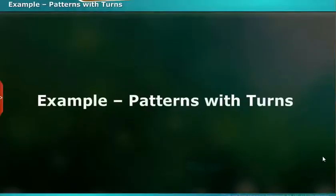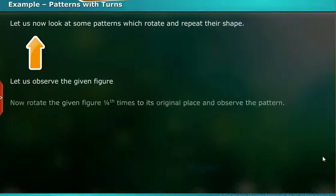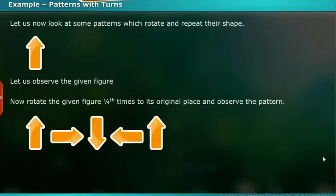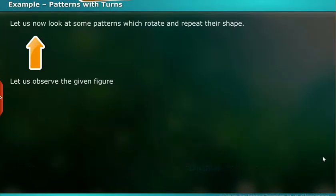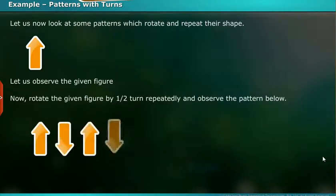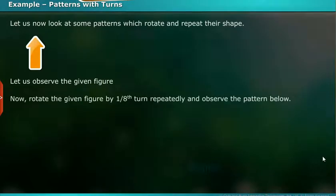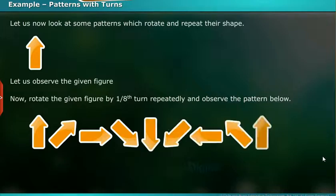Let us see an example on patterns with turns. Let us now look at some patterns which rotate and repeat their shape. Let us observe the given figure. Now rotate the given figure one fourth times to its original place and observe the pattern. Look at the above pattern. Each turn is one fourth part of the entire circular rotation. Now rotate the given figure by one by two turn repeatedly and observe the pattern below. Now rotate the given figure by one eighth turn repeatedly and observe the pattern below.